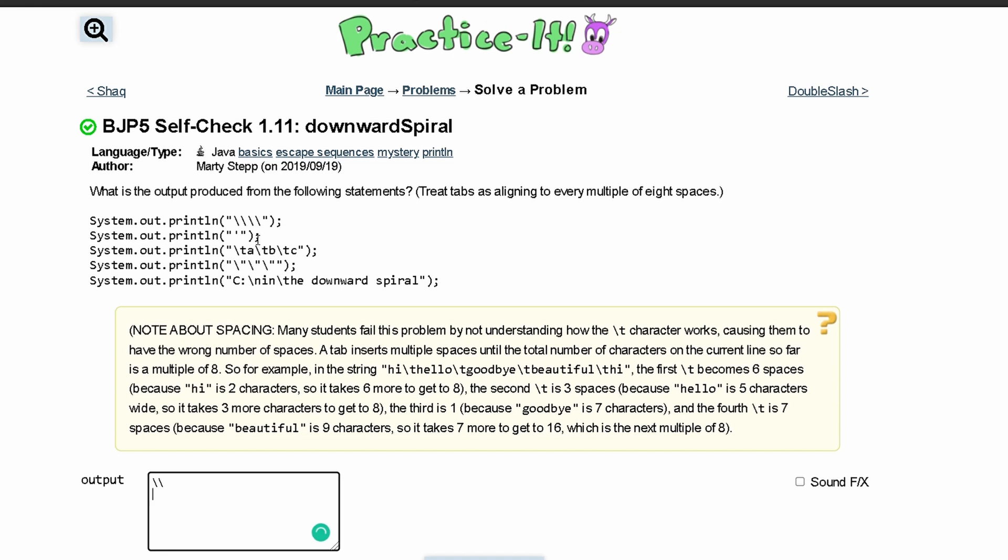The next line is just going to have this, and in the next line we have three tabs and in between those tabs we have ABC. So each tab is eight spaces.